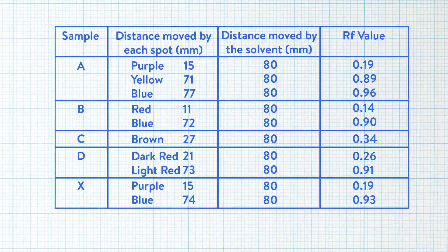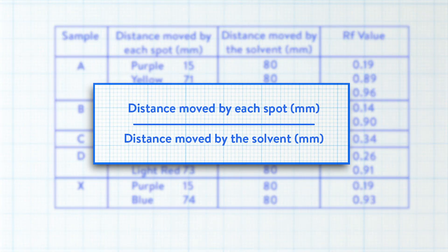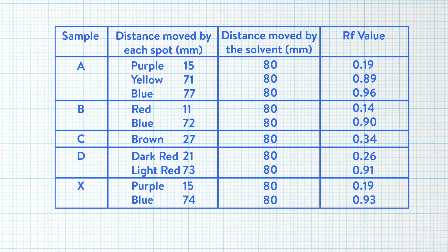Students then record these distances in a suitable results table and to calculate the RF value for each of the spots they do the distance moved by each spot divided by the distance moved by the solvent and they add this to their results table.